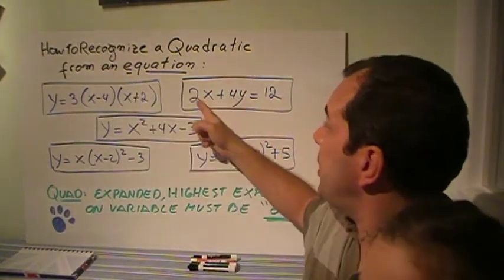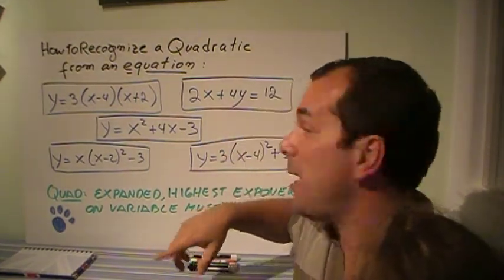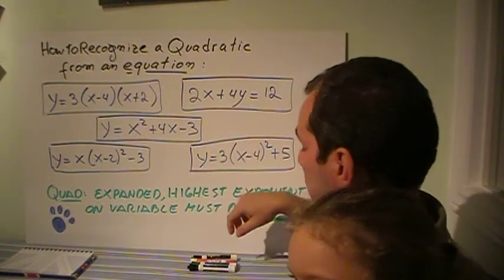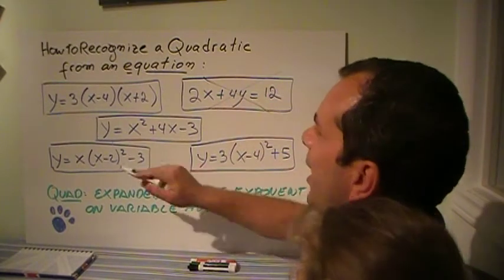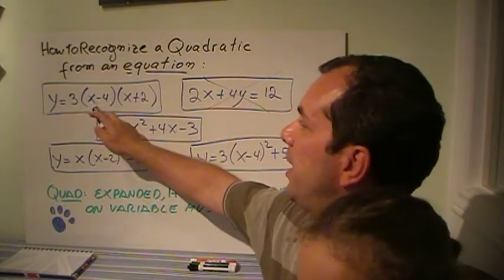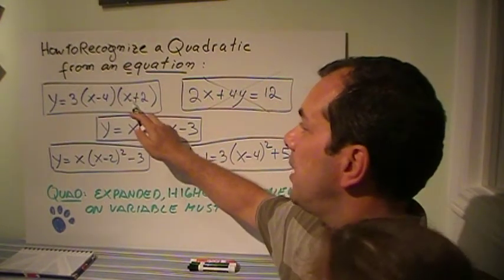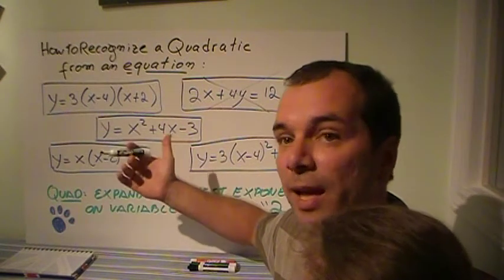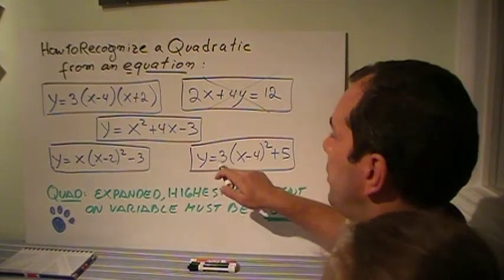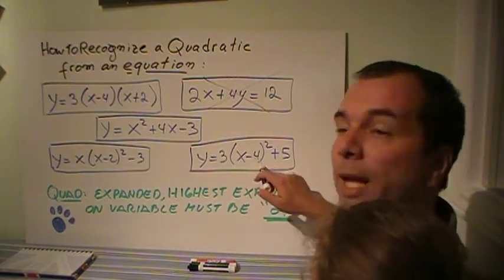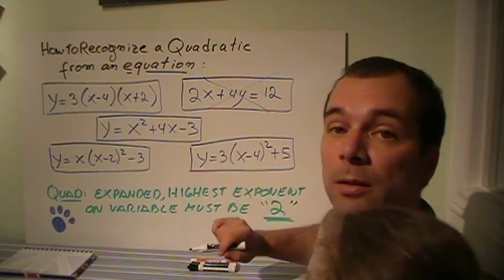This one — I've got 2x plus 4y. This is also expanded, but it's not to the power 2. Therefore, this is not a quadratic. This one, I have x times x. This is not expanded, so if I were to multiply x times x, I will end up with x squared, and that would be the highest value — so that is definitely a quadratic. And this one over here, I have x minus 4 the whole thing squared. So when I expand this bracket, I'm going to end up with x squared in the expanded form. So that is also a quadratic.